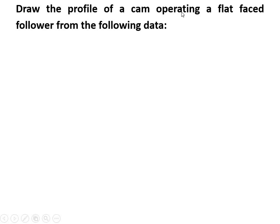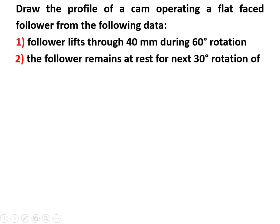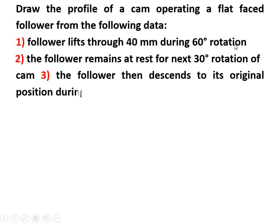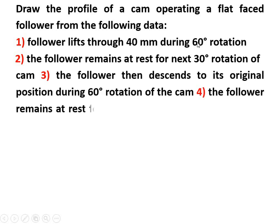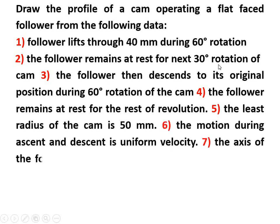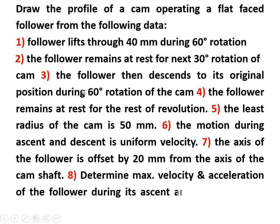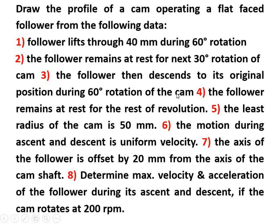Let's take one example: draw the profile of a cam operating with a flat face follower from the following data. The follower leaps through 40 mm during 60 degrees of rotation — this is the angle of ascent and the stroke length. The follower remains at rest for the next 30 degrees — this is the dwell period. The follower then descends to its original position during 60 degrees — this is the angle of descent. The follower remains at rest for the rest of the revolution — this is the remaining dwell period.